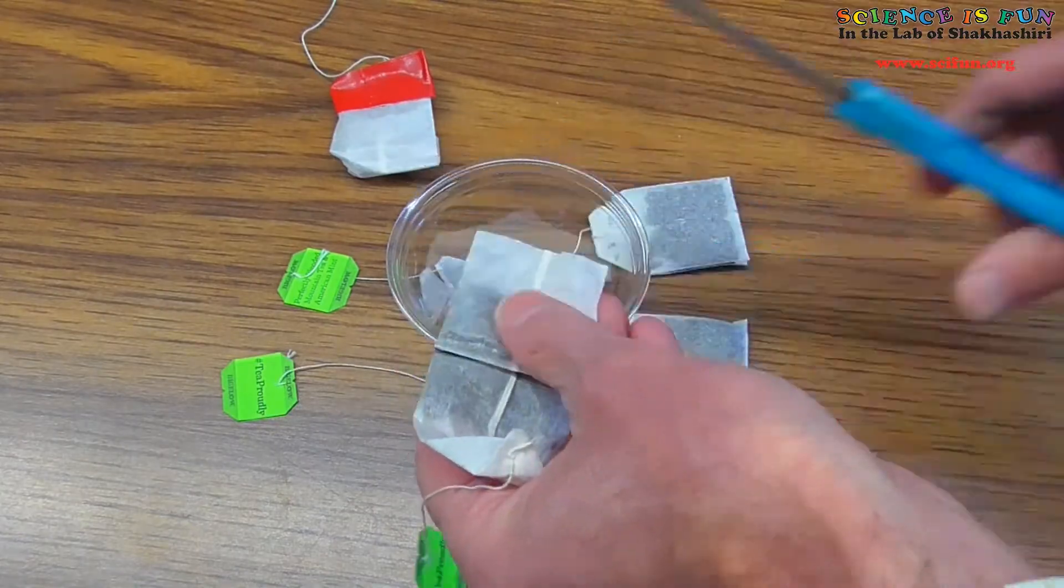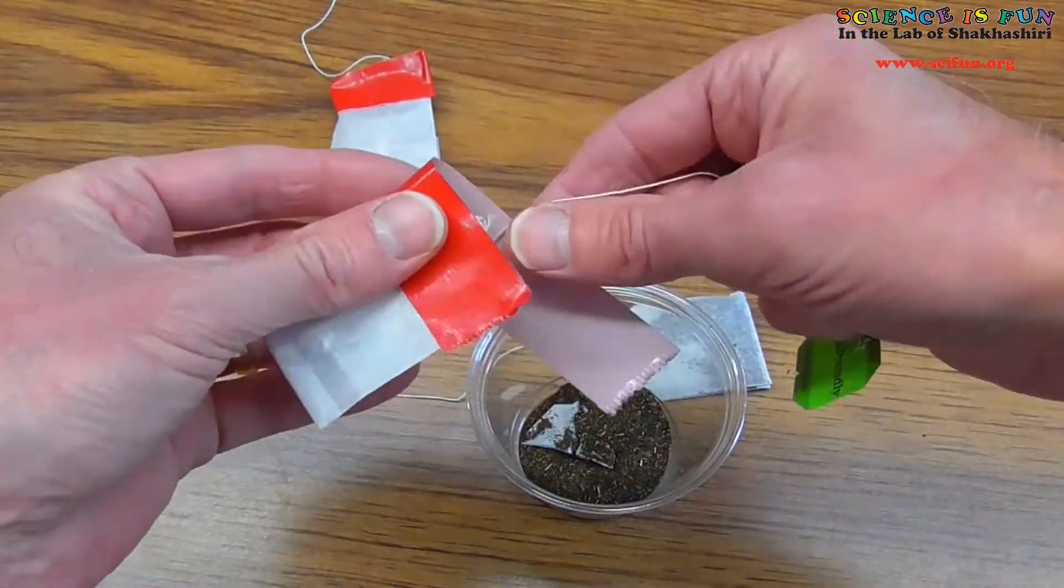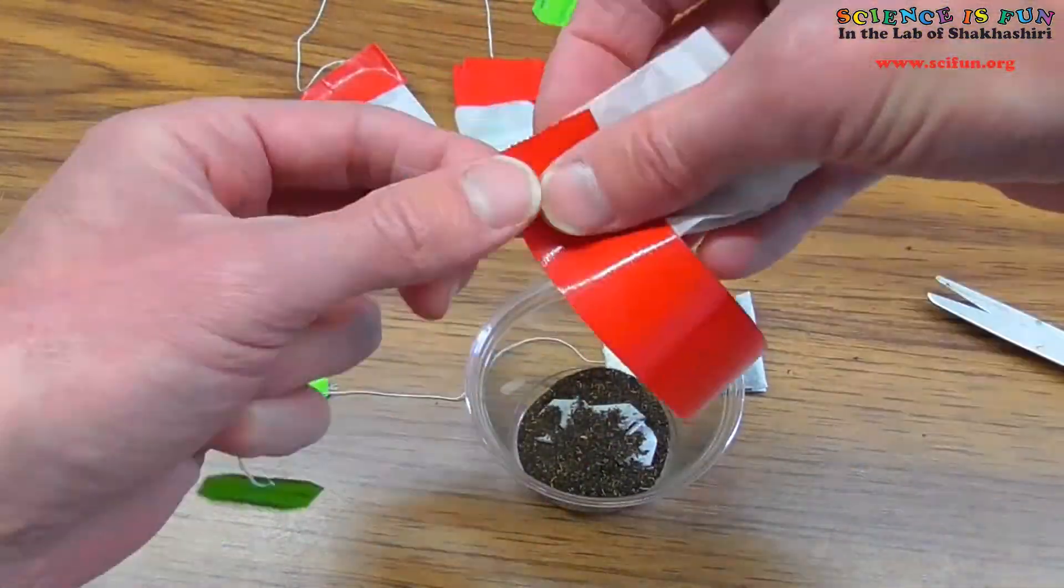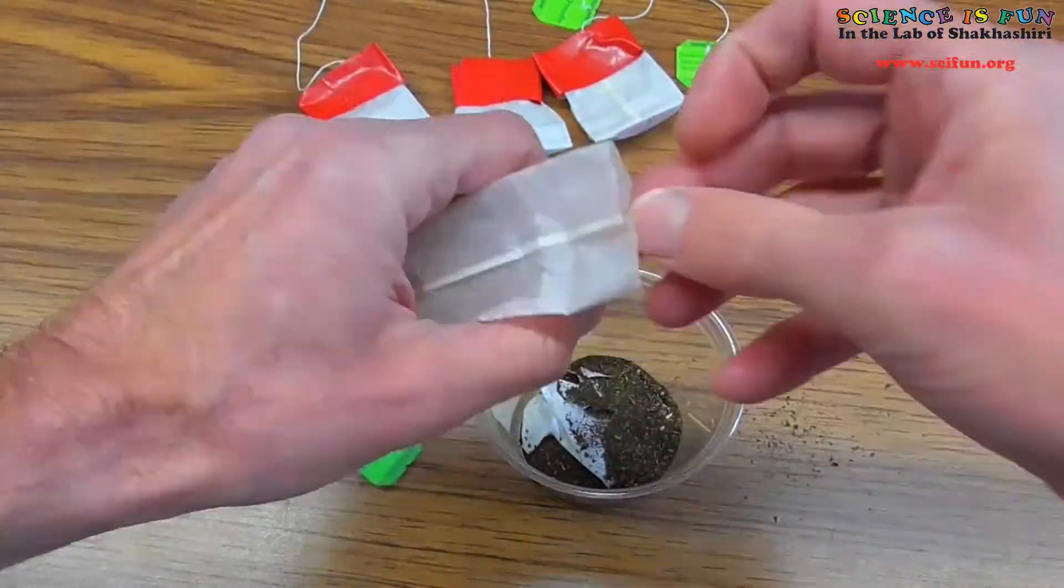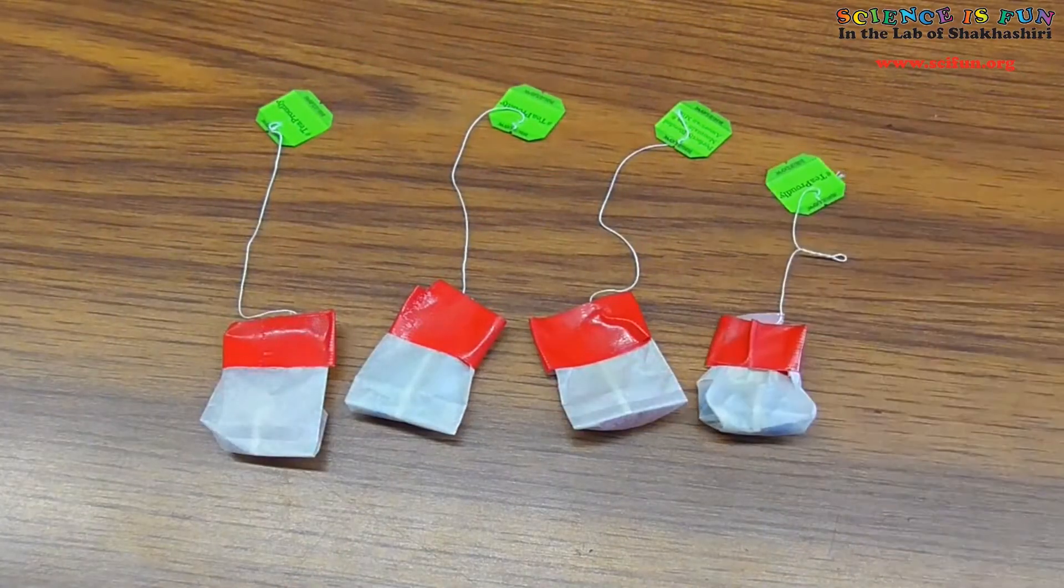Then I'll tape it shut. I'll prepare two bags with red M&Ms and two bags with blue M&Ms in this way. Almost done. One more bag. Alright, we're ready for the experiment.